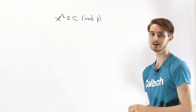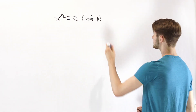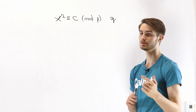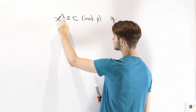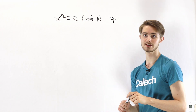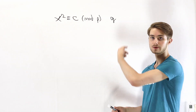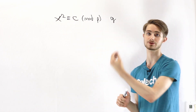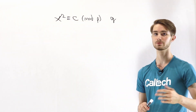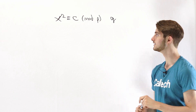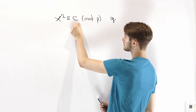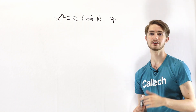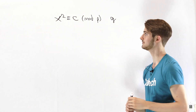We know that every prime p has a primitive root — let's call that primitive root g. What we can do is look at the index of x squared and the index of C. Because the powers of a primitive root g will give us all of the numbers mod p except for 0 — and we don't count 0 as a quadratic residue — we can represent both x squared and C in terms of powers of g, and that's where the idea of indices comes in.